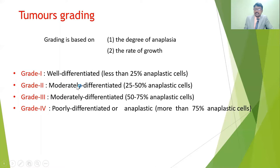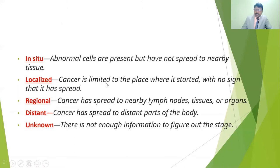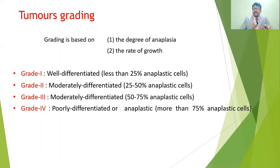Grade 2 is moderately differentiated, meaning cell size and shape are slightly altered from normal. Abnormal cells make up more than 25% but less than 50% of the tumor.